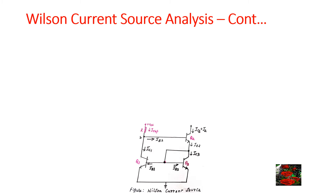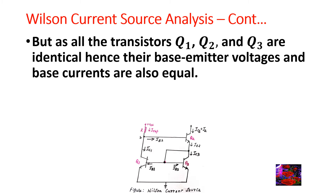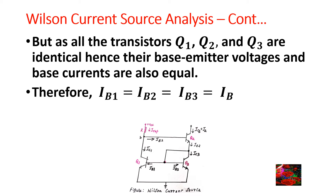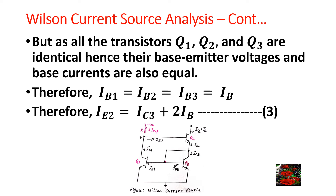As all transistors Q1, Q2, and Q3 are identical, their base-emitter voltages and base currents are also equal. Therefore, I_B1 = I_B2 = I_B3 = I_B. Therefore, equation 2 becomes: I_E2 = I_C3 + 2·I_B. Consider I_E3 = I_C3 + I_B3 also. I_E2 = I_C2 + I_B2.